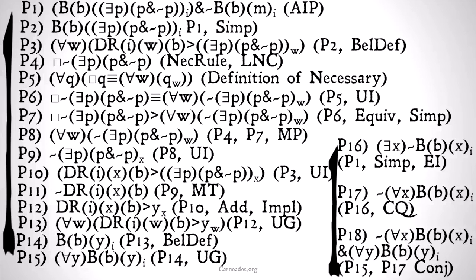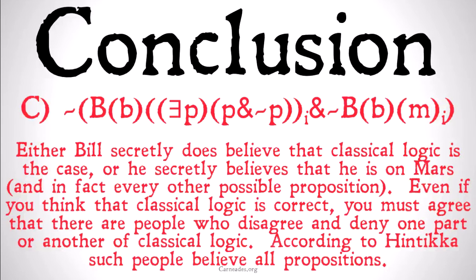So in conclusion, we can deny our original assumption. Either Bill secretly believes that classical logic is the case, or he secretly believes he is on Mars — and in fact every other possible proposition is true. Even if you think classical logic is correct, you must agree that there are people who disagree and deny one part or another of classical logic. According to Hintikka, such people believe all propositions, necessarily.